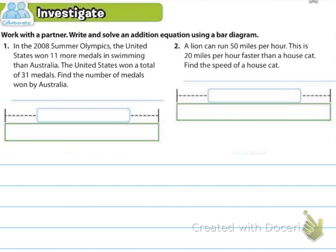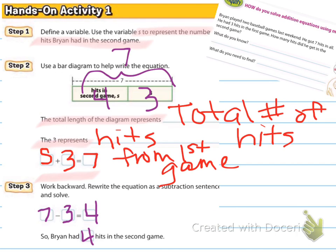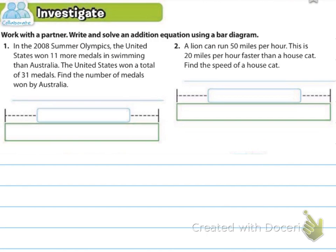So please go ahead and fill in your graph, just like we did on the last one, where you're going to say what the total is that you know. You're going to set up a variable, and make sure you define the variable so we know which one you're talking about. And then label what you do know, and then we'll figure out what the variable is to solve it.